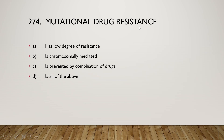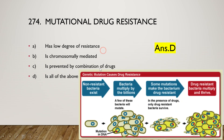Mutational drug resistance has a low degree of resistance, is chromosomally mediated, is prevented by combination of drugs, or all of the above? The right answer is option D, all of the above. If a mutation in DNA occurs, some mutations make the bacteria drug resistant, and these drug-resistant bacteria then multiply and survive.